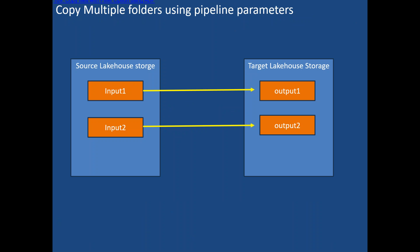Let's quickly discuss how we can do that. If you look at your source lakehouse storage, I'll create one source lakehouse and one target lakehouse. Within the source lakehouse, I'll create input one and input two folders. In the target lakehouse, I'll create output one and output two folders.